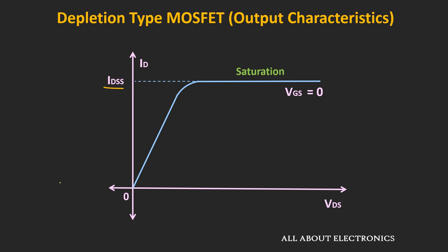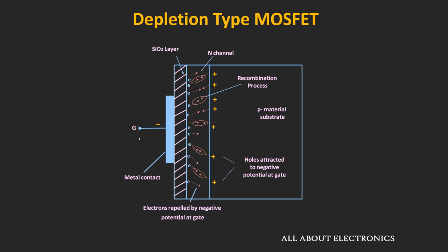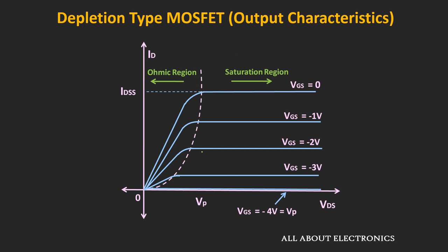Now let's see what happens when the voltage Vgs is negative. A negative voltage at the gate terminal will push the electrons towards the substrate. At the same time, the holes in the P-type substrate will also get attracted towards these electrons. Due to the negative voltage at the gate terminal, the electrons in the channel will get recombined with these holes. The rate of recombination depends on the applied negative voltage. As we increase this negative voltage, the rate of recombination increases, reducing the number of free electrons in the N-channel and effectively reducing the flow of current. As Vgs becomes more and more negative, the drain current reduces, and at one voltage — the pinch-off voltage — the drain current becomes zero.